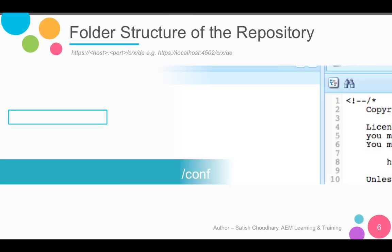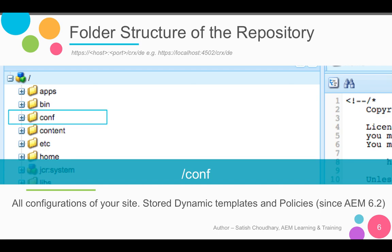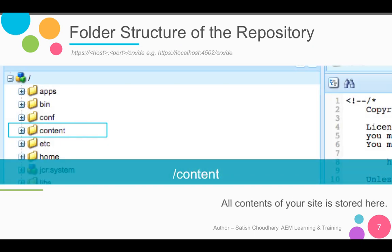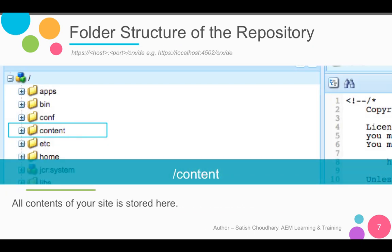The second folder is the conf folder. The conf folder contains all the configuration of your site. Since AEM 6.2, the dynamic templates or editable templates and the policies are also stored under the conf folder. Next we have the content folder. As the name suggests, it contains all the content of your sites — the site structure, site folders, and any content is stored in the content folder.